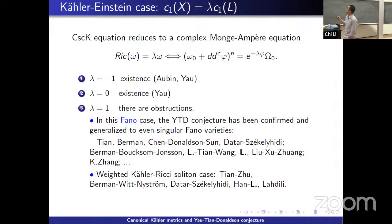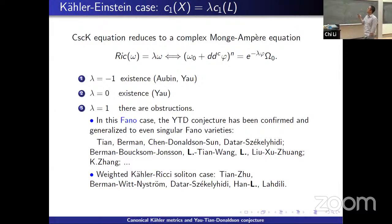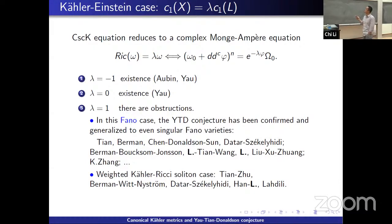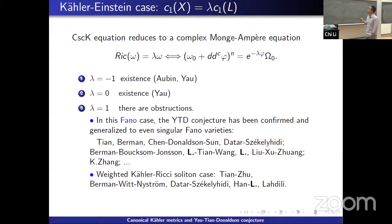Another important class for which the YTD conjecture was proved is the case of Kähler-Einstein manifolds. For Kähler-Einstein manifolds, we require the first Chern class to be proportional to the first Chern class of L, and the cscK equation reduces to a complex Monge-Ampère equation, which is second order. It is well known that if the Ricci constant is minus one, there always exists a Kähler-Einstein metric, proved by Aubin and Yau. When the Ricci constant is zero, we have the existence of Ricci-flat Kähler metrics by Yau's theorem. But when lambda is positive, there are obstructions. In this Fano case, the YTD conjecture has been confirmed and generalized to even singular Fano varieties.